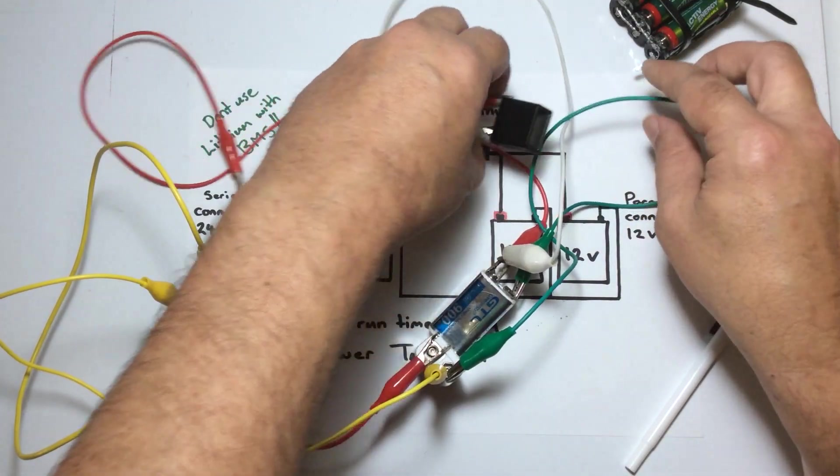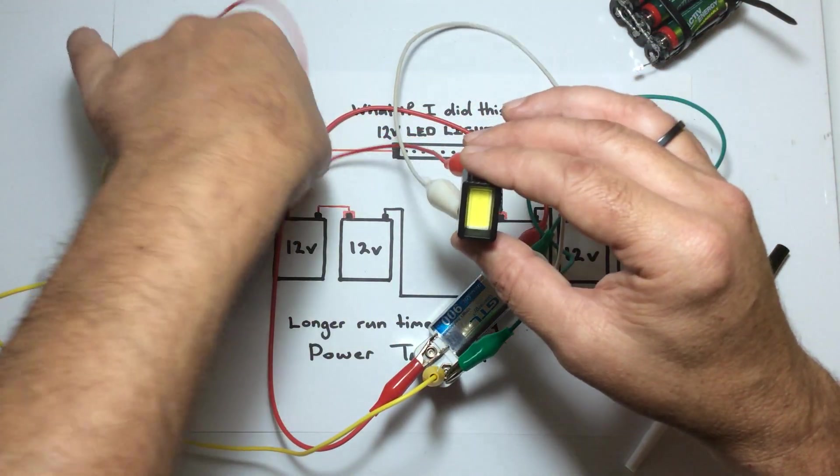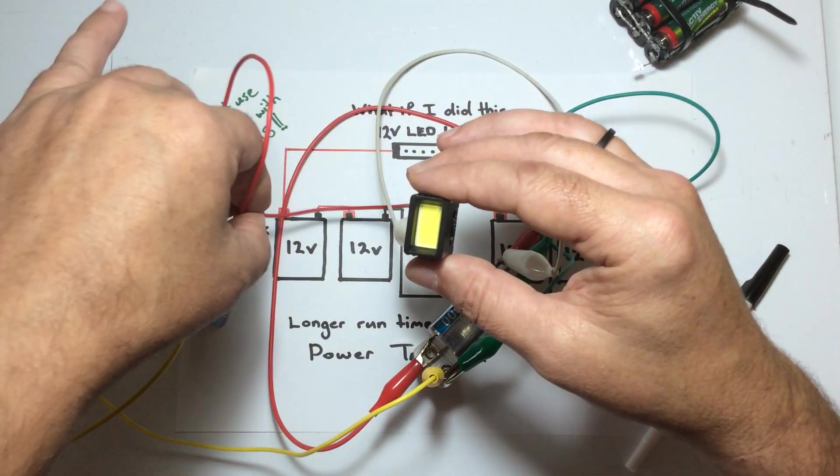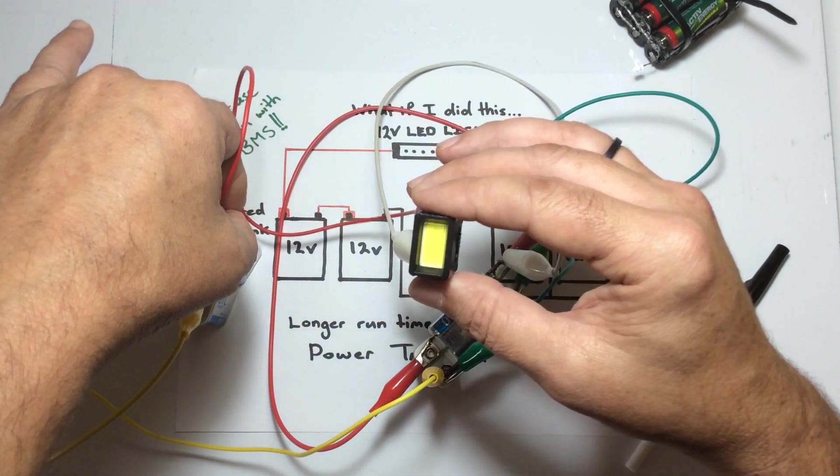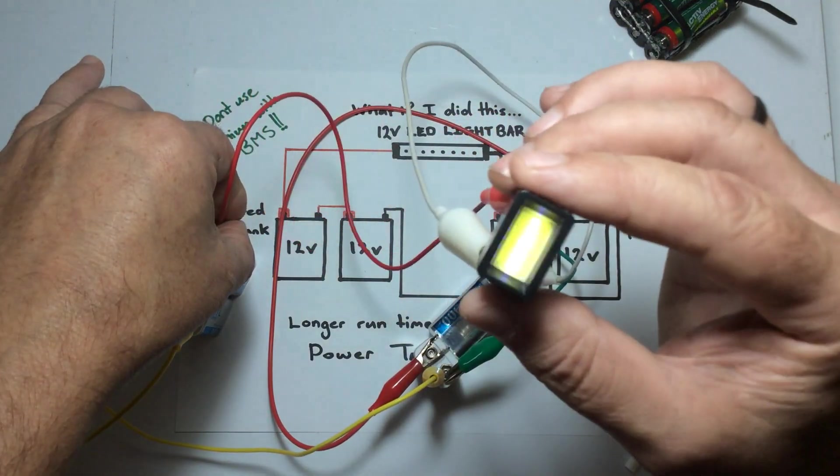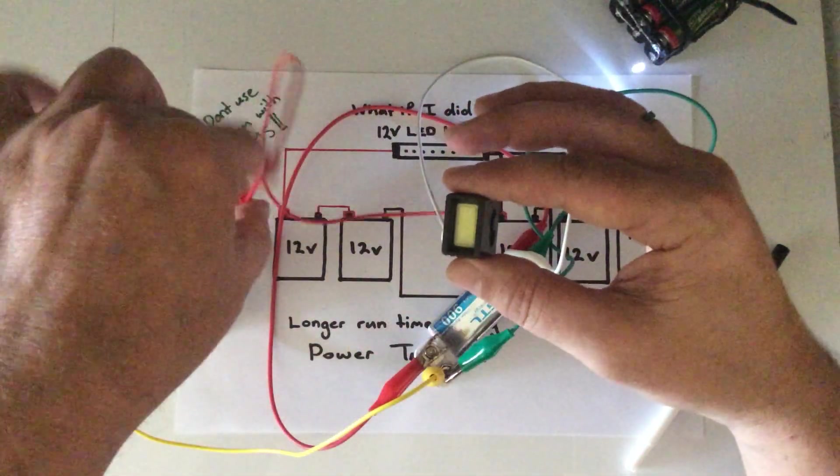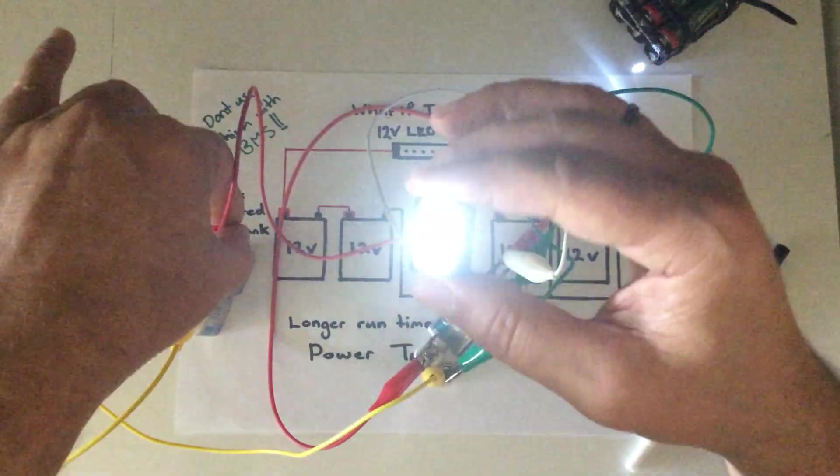These two are placed in series, so positive to negative. And then when we connect, I'll try and hold this light in a position so the camera can see. When I touch the positive on this side it should transfer the power back to the now empty batteries. Maybe I'll turn the light off just so you can see.